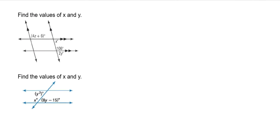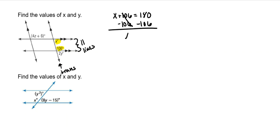So we're given x, y, and z — we might as well solve them in order. Let's focus on x. The only angle measure we're given is 106 degrees. This is the transversal and these are the parallel lines. They are on the same side of the transversal and on the inside of the parallel lines — same side inside is consecutive interior, which means you add them both together and set them equal to 180. Subtract 106, and x is 74 degrees.